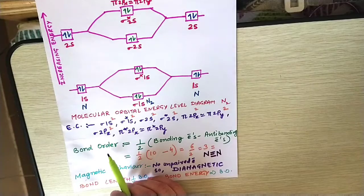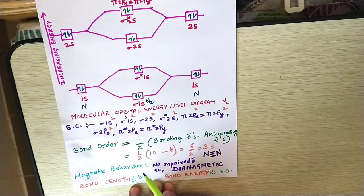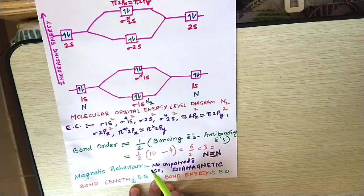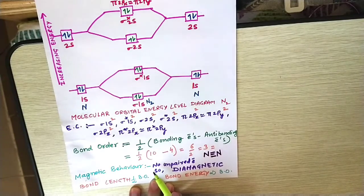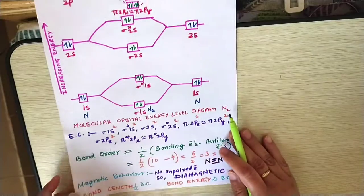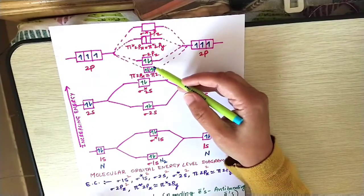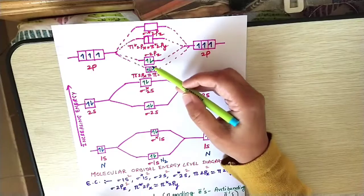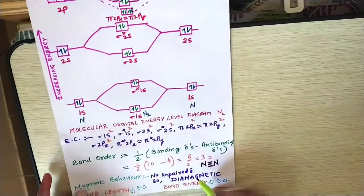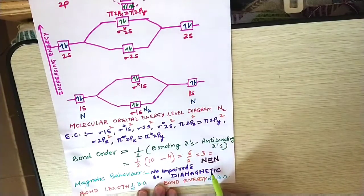Bond order, magnetic behavior, which gives us the parameters of paramagnetic and diamagnetic behavior of a molecule. If all the electrons are paired, like in nitrogen molecule, all the electrons are paired up, so this is a diamagnetic molecule.